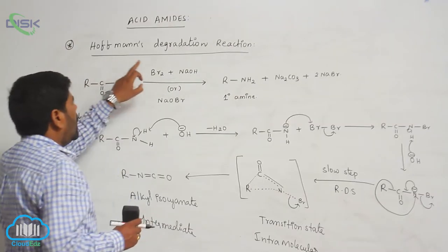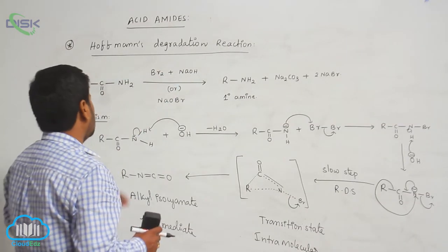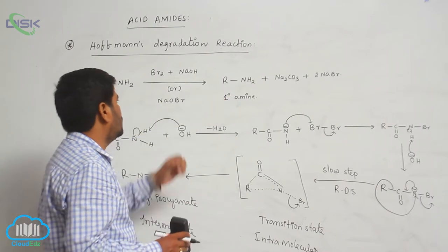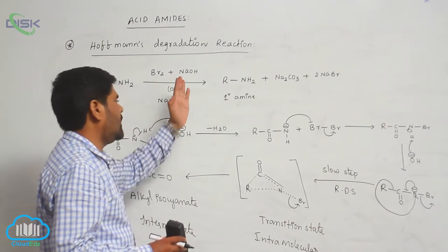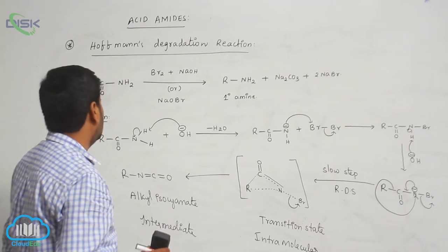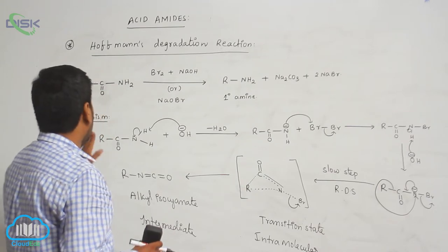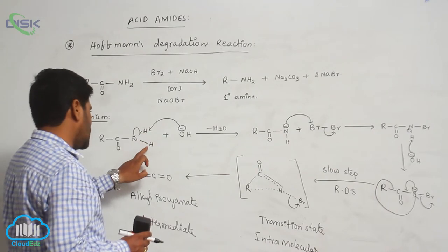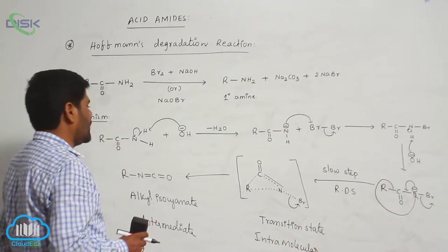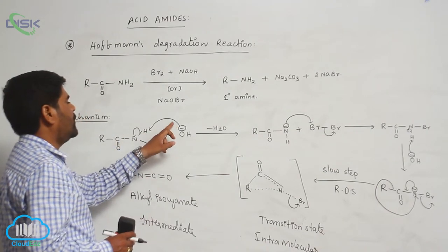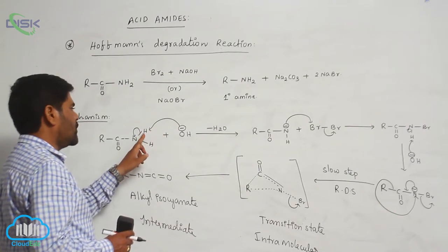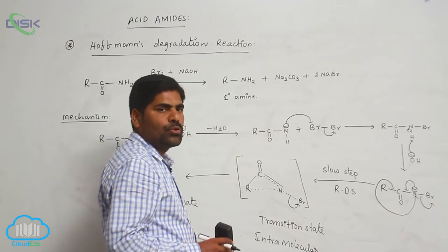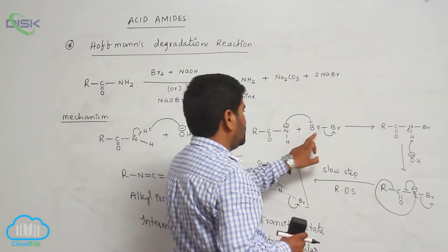Mechanism of Hofmann's degradation reaction: An acid amide converts into an amine in the presence of bromine and sodium hydroxide. First, the hydrogen on nitrogen is acidic because the carbonyl can act as an electron-withdrawing group, so base abstracts a proton to form a negatively charged nitrogen. It then reacts with bromine.